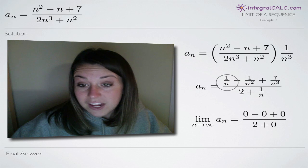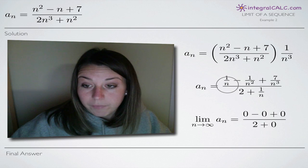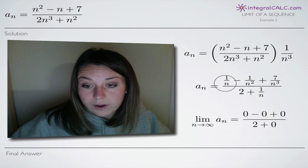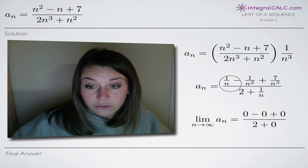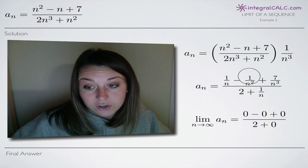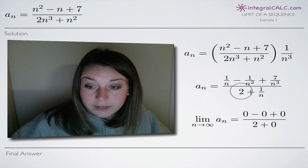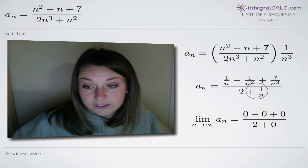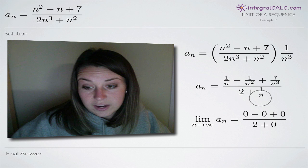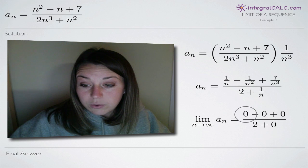But anyway, so when we plug in infinity for n, notice, remember that whenever n is in the denominator, that term is going to become 0. So we'll get 0 for this first term, we'll get 0 for the second term and we'll get 0 for the third term and then in the denominator, 2 will stay as it is and we'll get 0 for this second term here in the denominator. So as you can see pretty quickly, we're going to have 0 in our numerator.